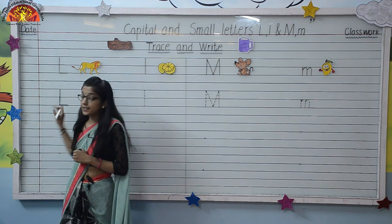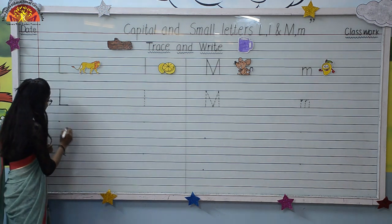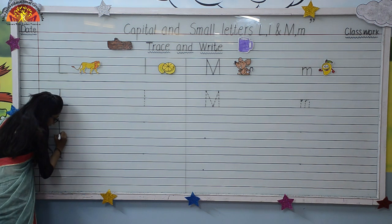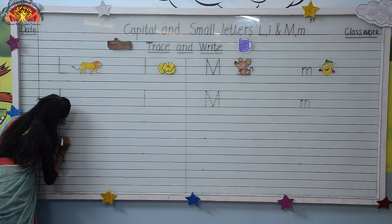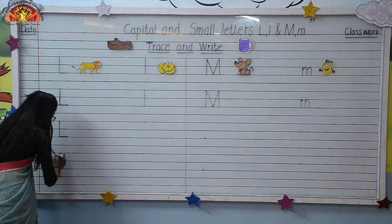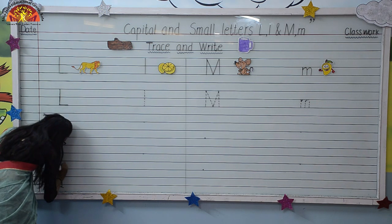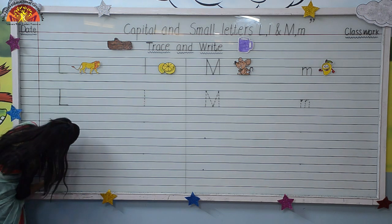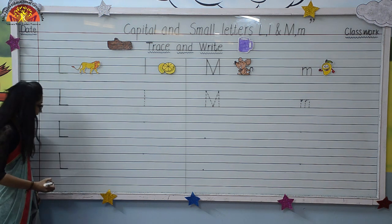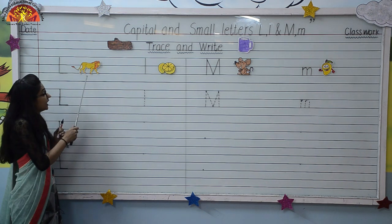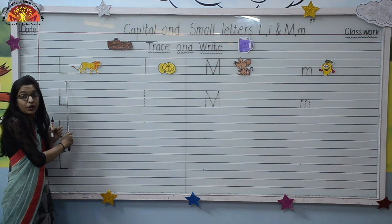Now let's make this letter on dot. Put your pencil in. Make a standing line and a sleeping line on the third line. Like this. So this is capital letter L. L for lion.